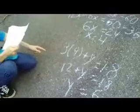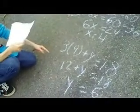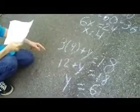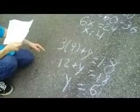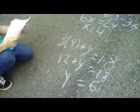Substitute x equals 4 into the second equation and solve for y. Be sure to write the solution as the ordered pair (4, 6).